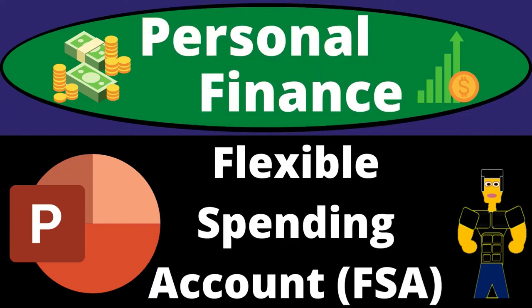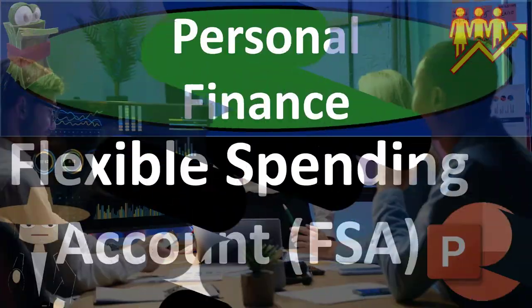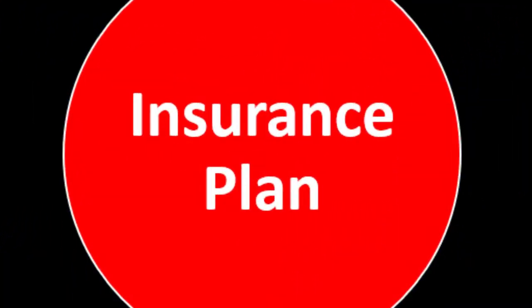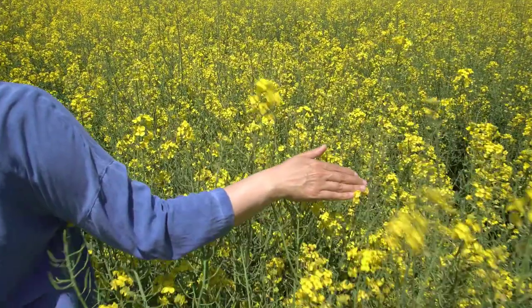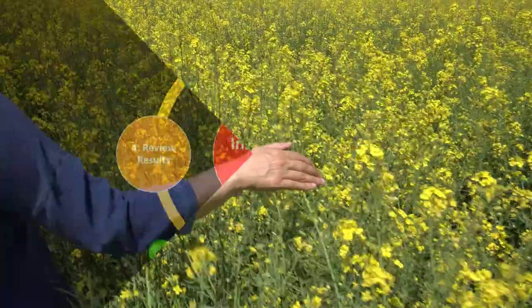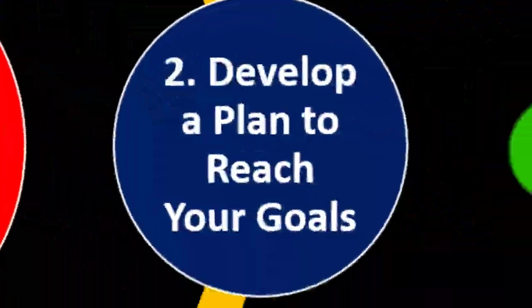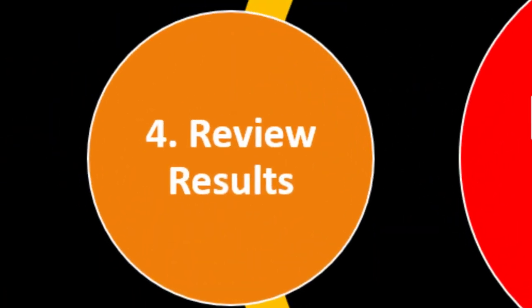Personal Finance PowerPoint Presentation: Flexible Spending Account, FSA. Prepare to get financially fit by practicing personal finance. Insurance is part of our long-term risk mitigation strategy where we follow the adage of measure twice, cut once — put a formal process in place: setting goals, develop a plan to reach them, put the plan in action, review the results.